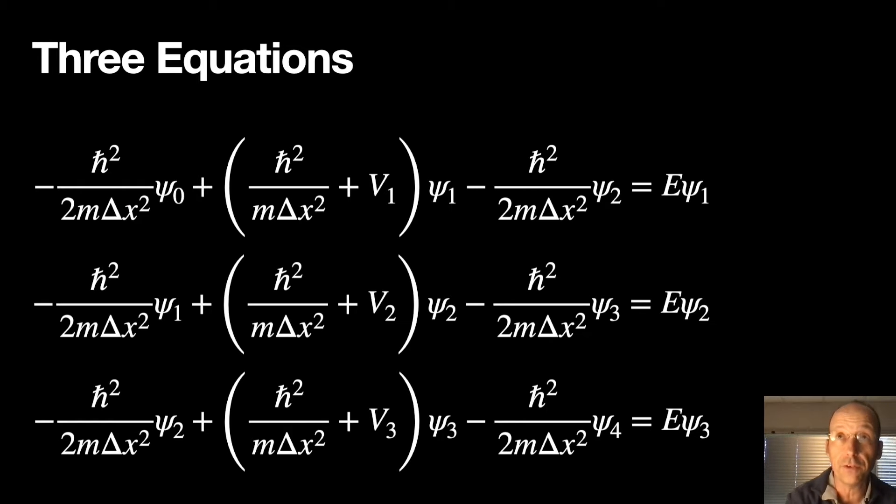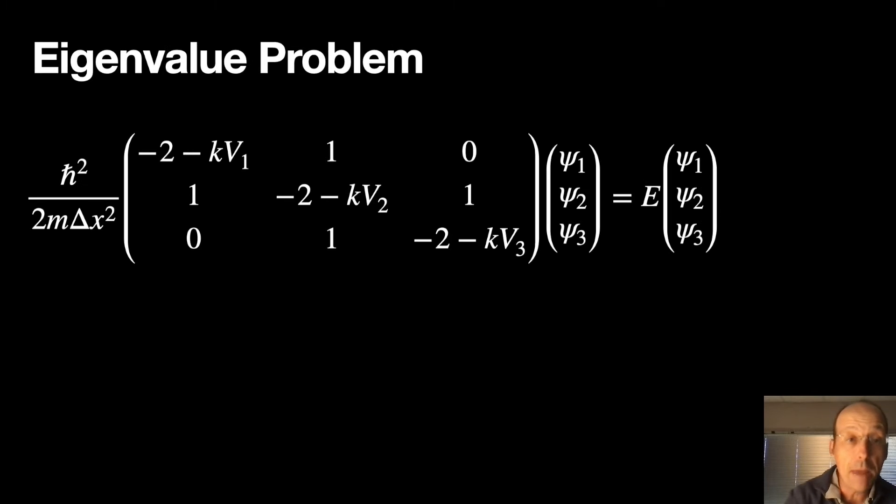And then I get those three equations right there. Now what we want to do is to write this as the following matrix operation. Here I'm just calling K this thing right here. So I have this tri-diagonal matrix. So I only have the diagonals of negative two and the potential. And then ones and then zeros.